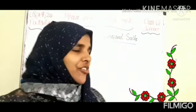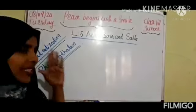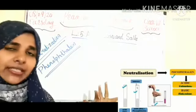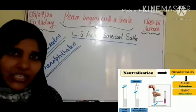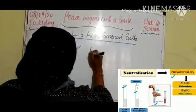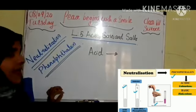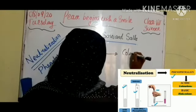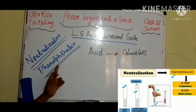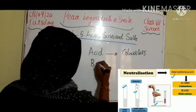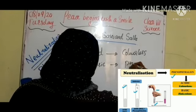Do you know, children? Phenolphthalein is a type of indicator. We know what an indicator is — we already learned some examples about indicators. When we add phenolphthalein to an acidic solution, that solution becomes colorless. But when we add phenolphthalein to a basic solution, that solution will become pink.